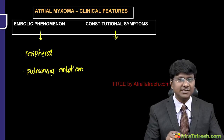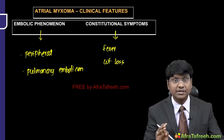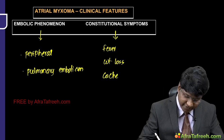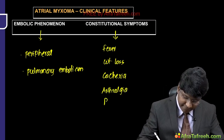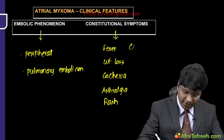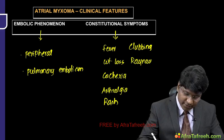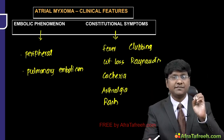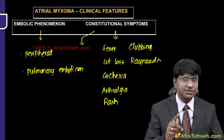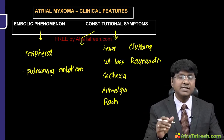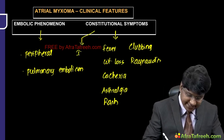Constitutional symptoms include fever, weight loss, cachexia, malaise, arthralgia, rash, clubbing, and Raynaud's phenomenon — where there is peripheral vasoconstriction of the digits on exposure to cold. The development of these constitutional symptoms is mainly because of the release of cytokines by the tumor — specifically interleukin-6.